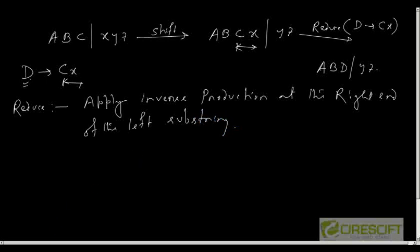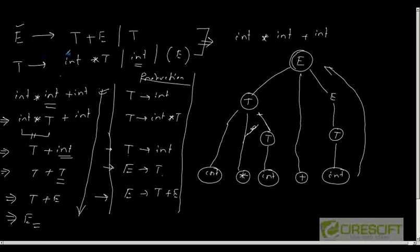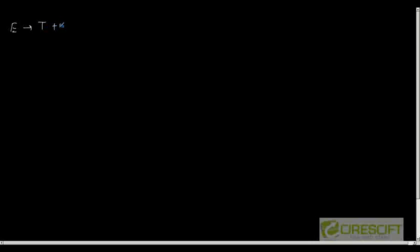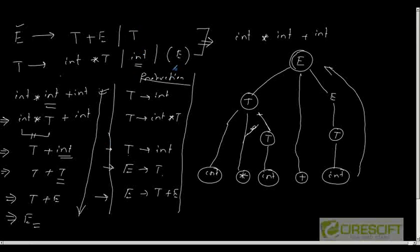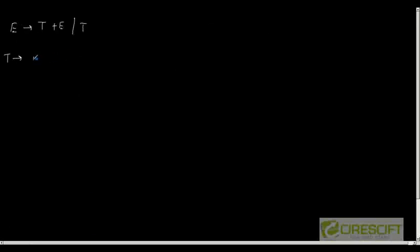Let me go through the earlier example. I have the grammar: E → T plus E | T, and T → int * T | int | E. Now let us try to perform bottom-up parsing by applying shift and reduce on an input string.